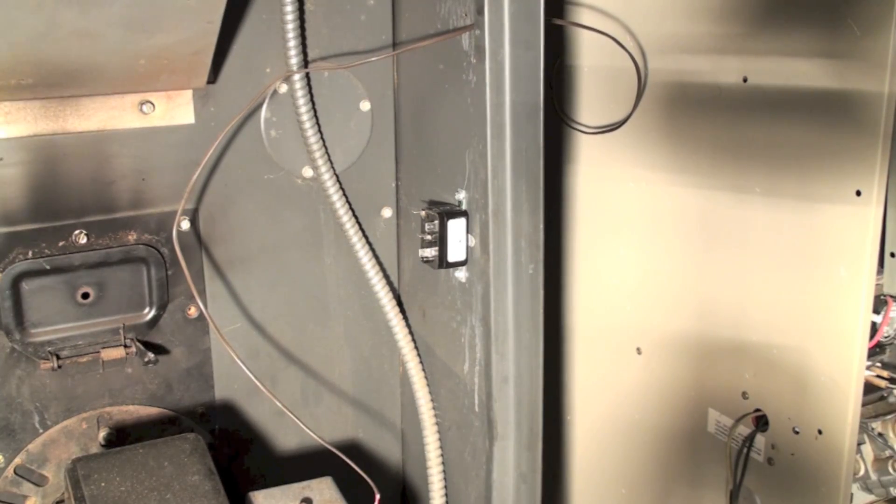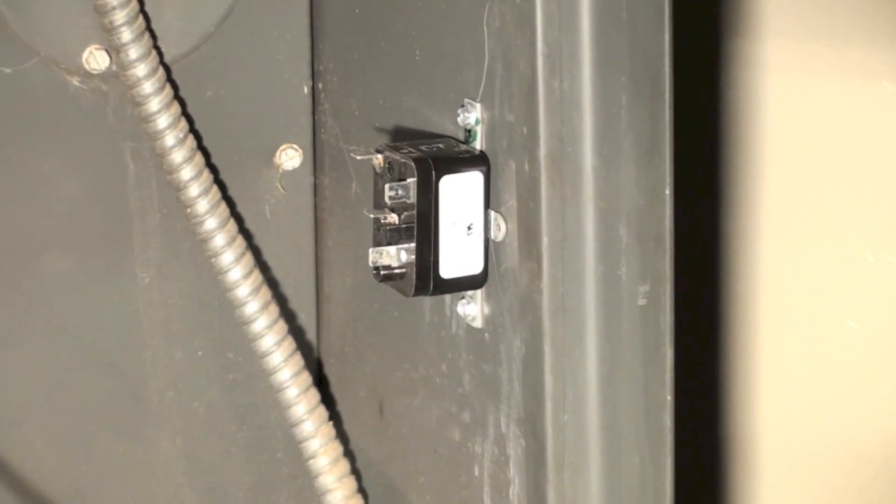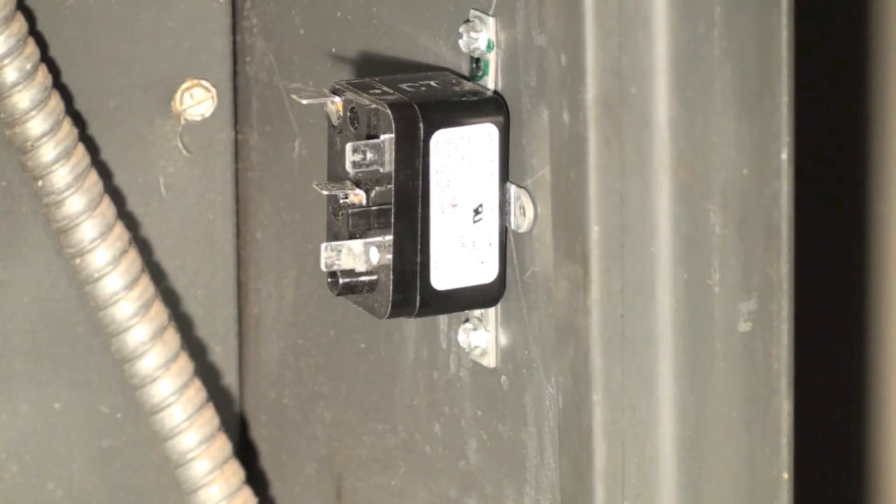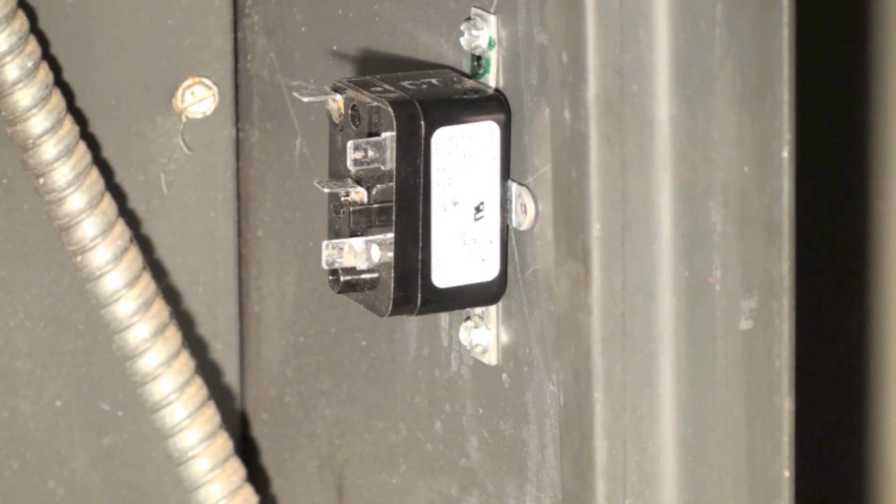You can see here the relay is mounted. This is using the relay I showed earlier. We usually call it a peanut relay because it's a low power relay. There's any number of relays you could use, but it has to have a 24 volt coil.